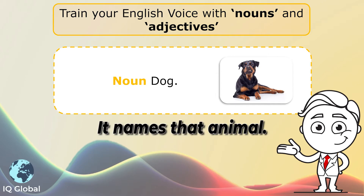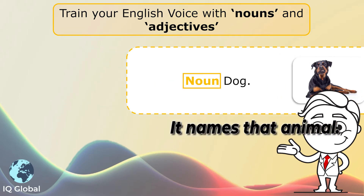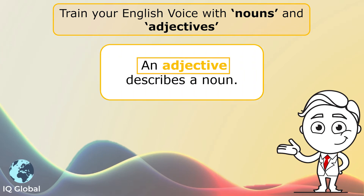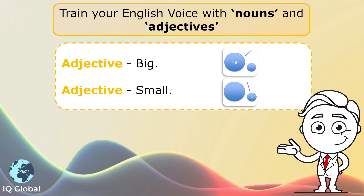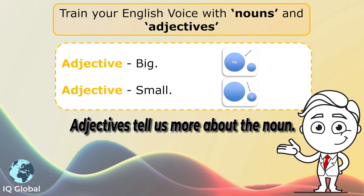It names that animal, so it is a noun. An adjective describes a noun. For example, big or small. Those two words tell us more about the noun. They describe a noun.